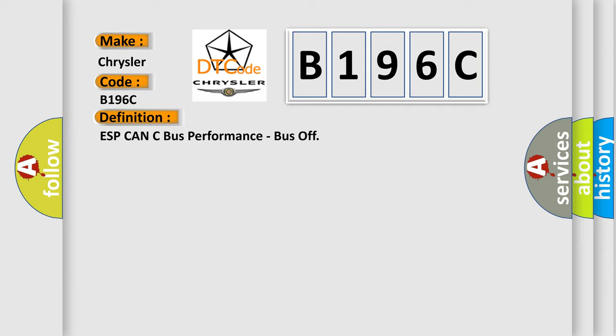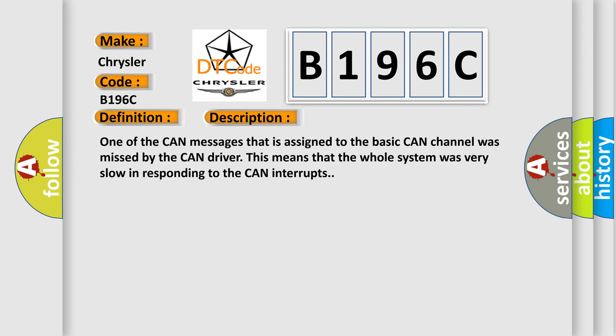And now this is a short description of this DTC code. One of the CAN messages that is assigned to the basic CAN channel was missed by the CAN driver. This means that the whole system was very slow in responding to the CAN interrupts.